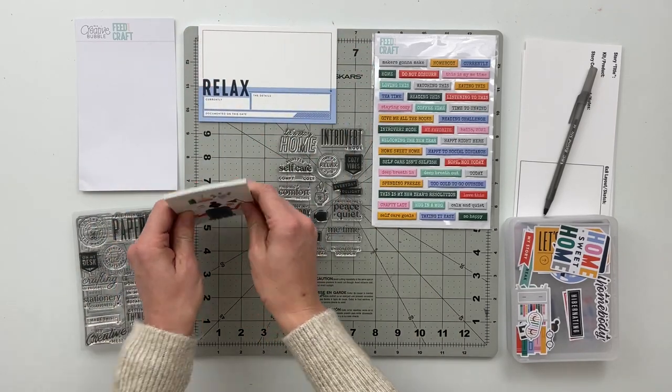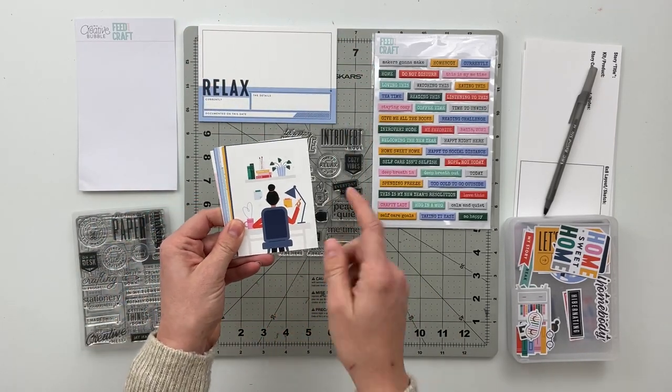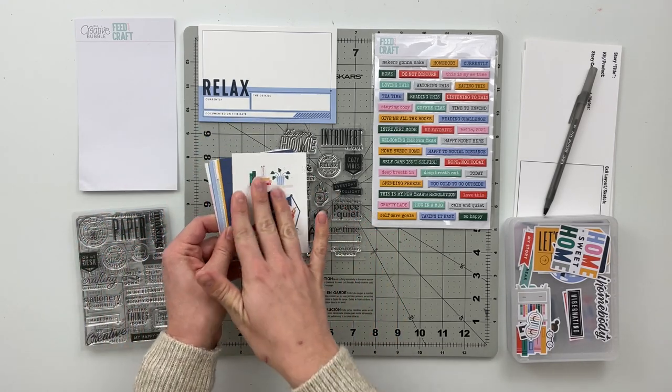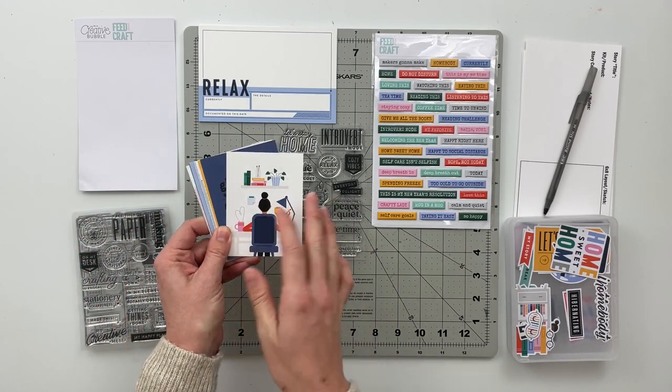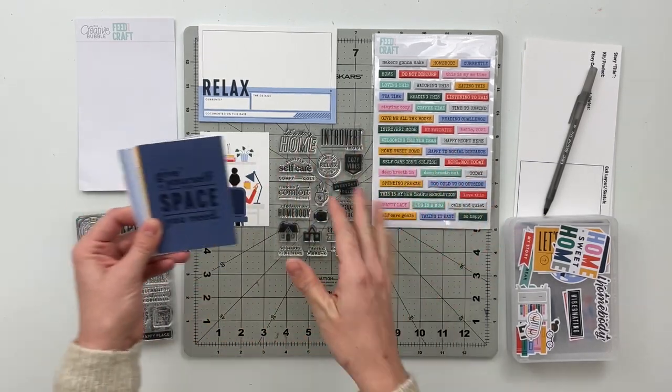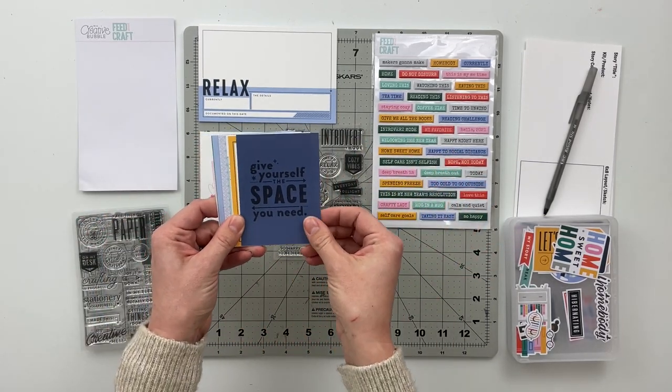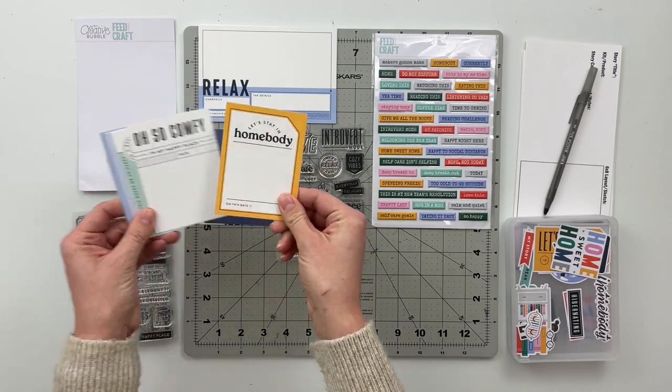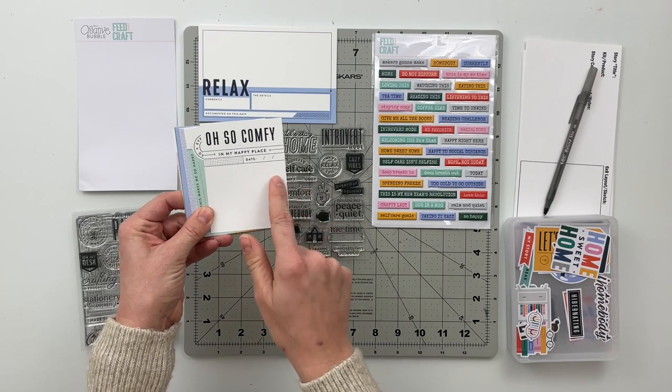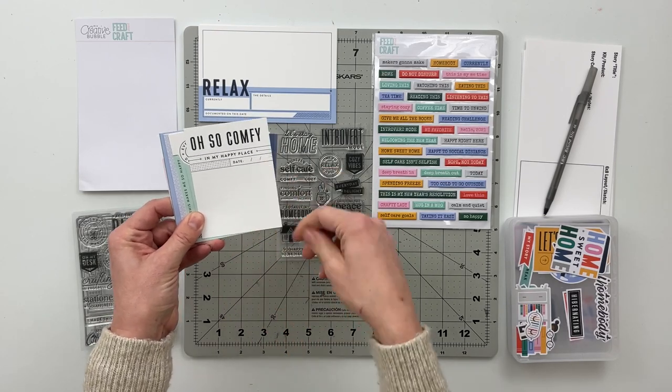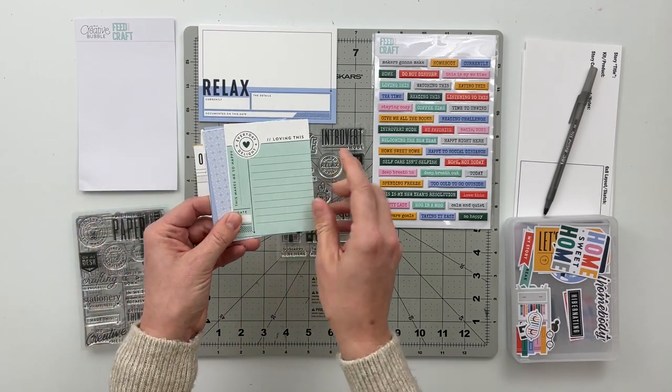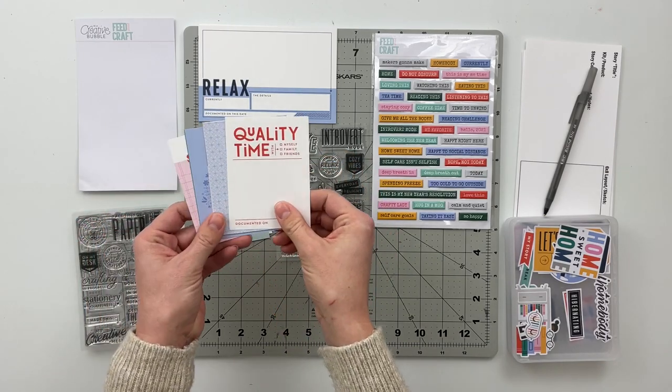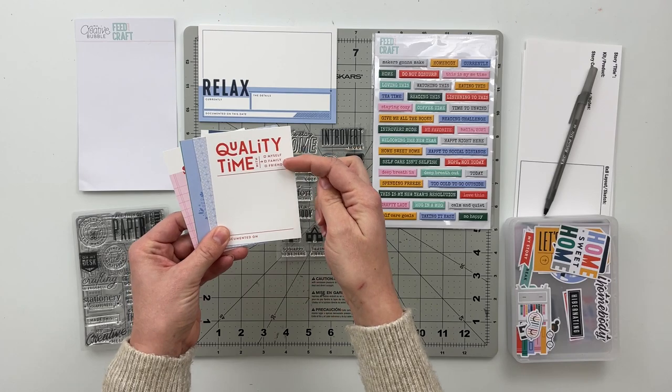The three by four cards we have this one which is awesome. It's like a girl in her office space. I should also say that this kit was designed by In a Creative Bubble, Jerilyn Psy. So yes, we've got give yourself the space you need. Let's stay in homebody. Oh so comfy in my happy place. A great place for journaling or a photo. Loving this. Everyday delight. This makes me so happy. Quality time with myself, family, friends.